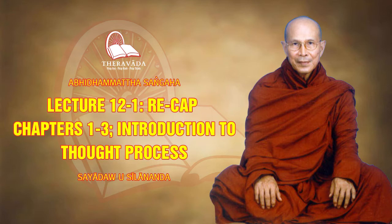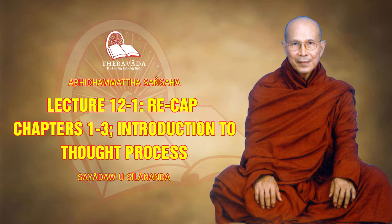Among these 14, there are four called unwholesome universals — they arise with all 12 unwholesome cittas. Numbers 14 to 17: the first is delusion (moha), then 15 — shamelessness, 16 — fearlessness of wrongdoing, and 17 — restlessness of mind. And then the other group — unwholesome occasionals — greed and others — arise with some unwholesome consciousness only, not each and every type.